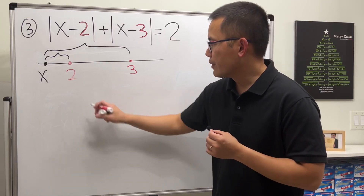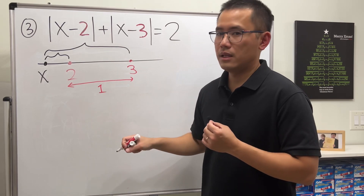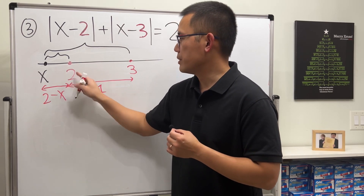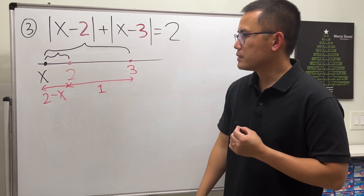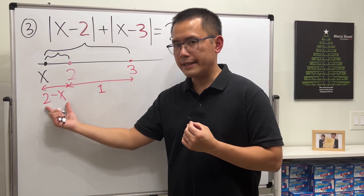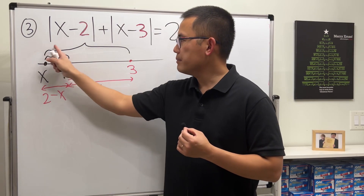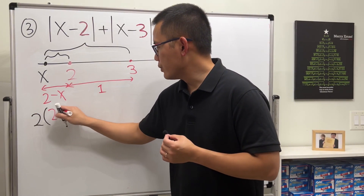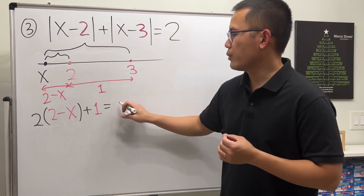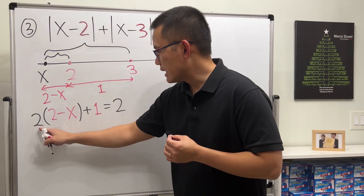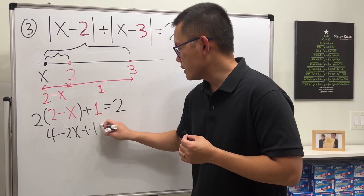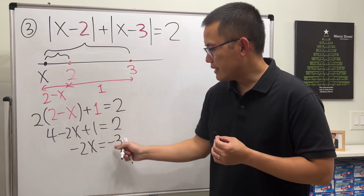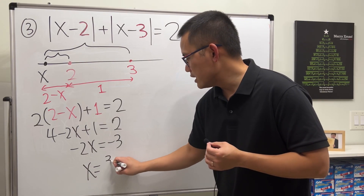Looking at the picture, from 2 to 3 that equals 1, and the distance from x to 2 is 2 minus x since x is to the left of 2. Notice that the segment from x to 2 is counted twice because it appears in both absolute values. So the equation simplifies to 2 times (2 minus x) plus 1 equals 2. Expanding: 4 minus 2x plus 1 equals 2, which gives 5 minus 2x equals 2. Subtract 5 from both sides: negative 2x equals negative 3. Divide by negative 2: x equals 3/2. That's the first solution.